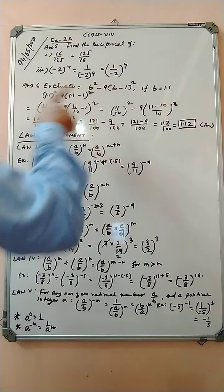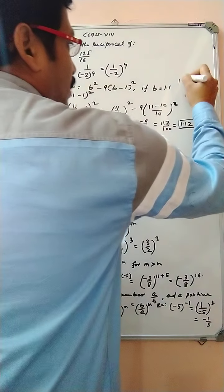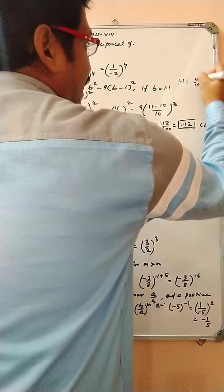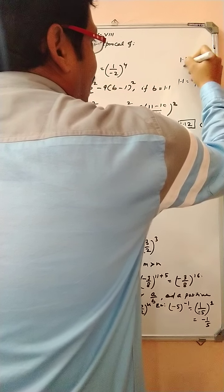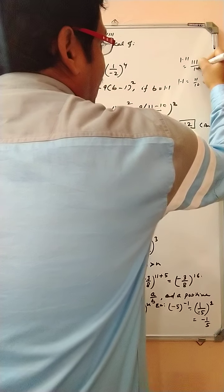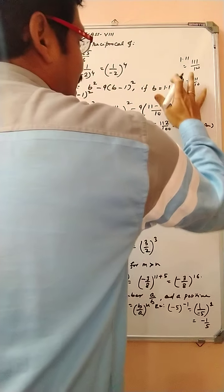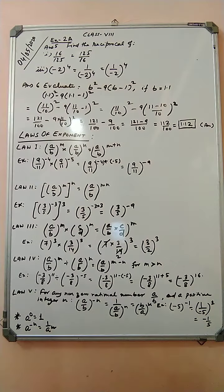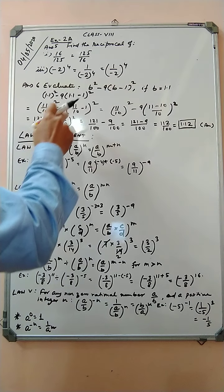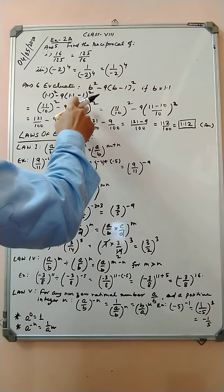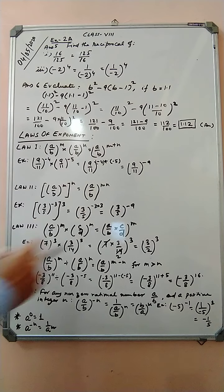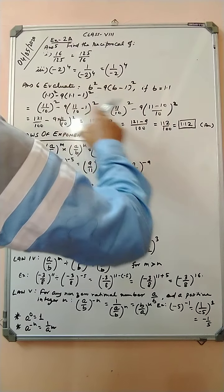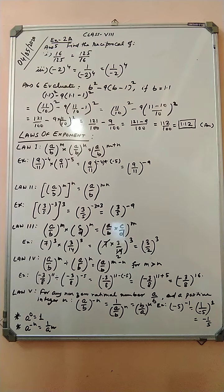Why? Because 1.1 equals 11 by 10. If it were 1.11, it would be written as 111 by 100 — we are simply converting the decimal into a fraction. Now 11 squared is 121, 10 squared is 100. For the bracket: 11 by 10 minus 1 equals 11 minus 10 by 10, which is 1 by 10. So we have 121 by 100 minus 9 into 1 by 10 whole squared.